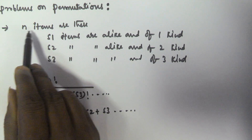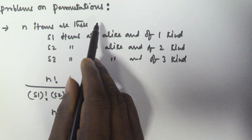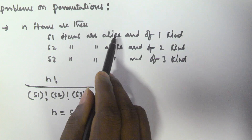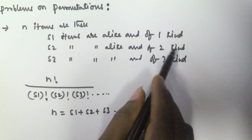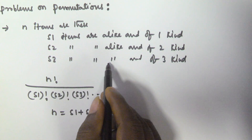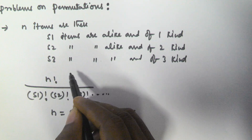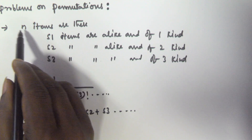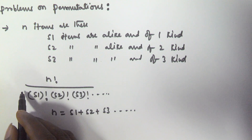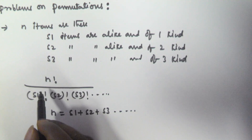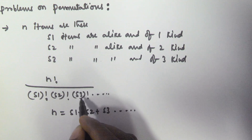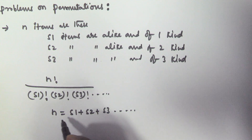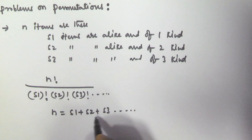So, whenever there are N items, out of which S1 items are alike and of one kind, S2 items are alike and of second kind, and S3 items are alike and of third kind and so on, the number of arrangements is given by N factorial divided by S1 factorial, S2 factorial, and S3 factorial, where N equals S1 plus S2 plus S3 and so on.